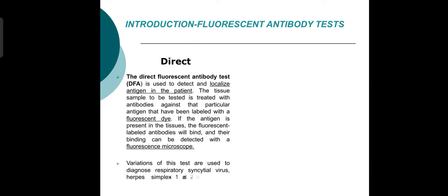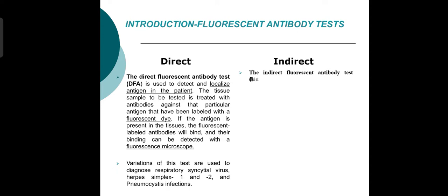The binding can be detected with a fluorescence microscope. Variants of this test are used to diagnose diseases such as herpes simplex virus types 1 and 2, cytomegalovirus, and pneumocystis infections.